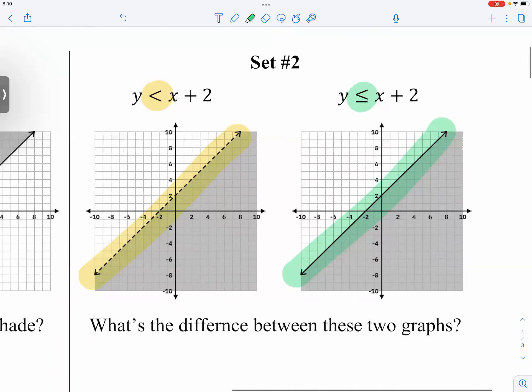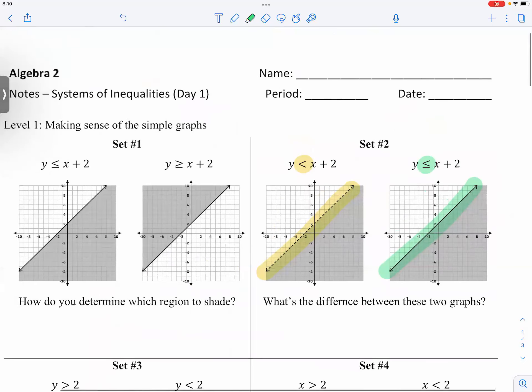Okay, so between set one and two, we visited two really crucial concepts here in inequality. One, which region to shade. And number two, how do we decide what kind of line to use? It all depends on the sign. Is it with the equal or not with the equal? Then you know if it is going to be a solid line or a dashed line.